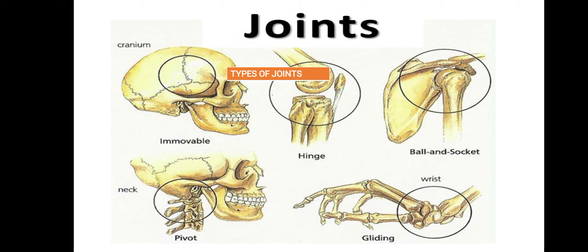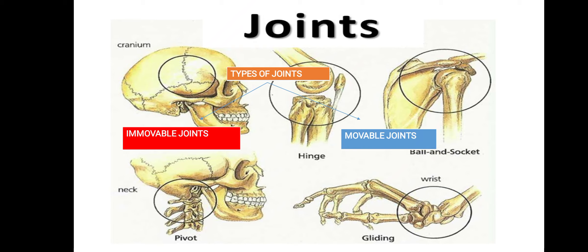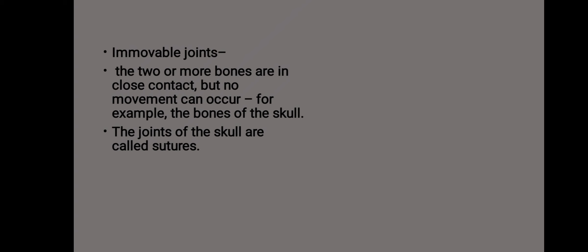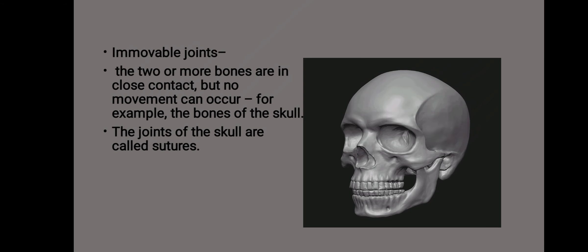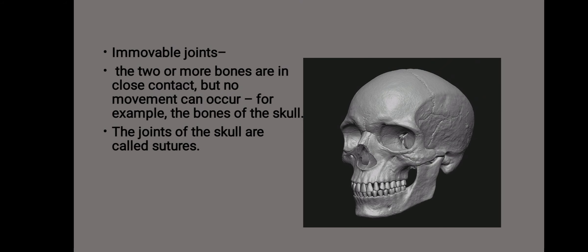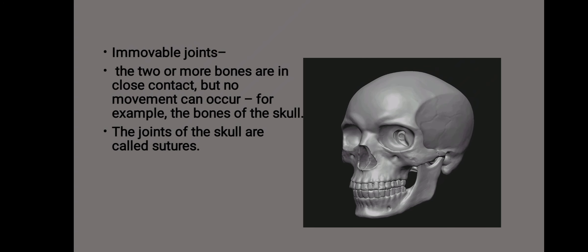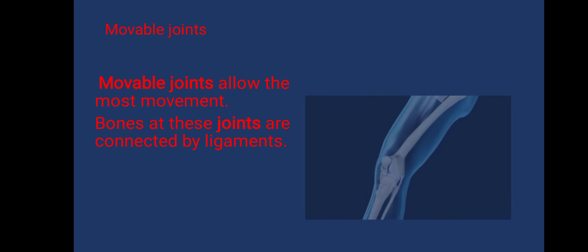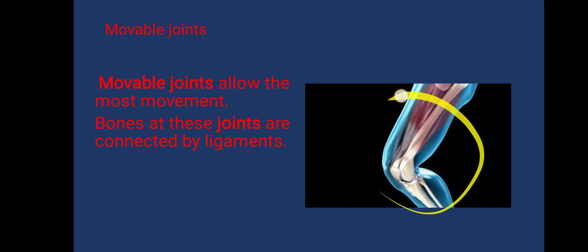Joints are of two types: immovable joints and movable joints. Immovable joints are when two or more bones are in close contact but no movement can occur — for example, the bones of the skull. The joints of the skull are called sutures. Movable joints allow the most movement, and bones at these joints are connected by ligaments.